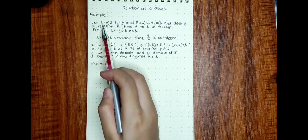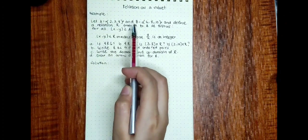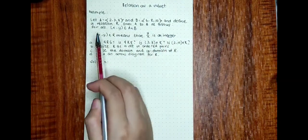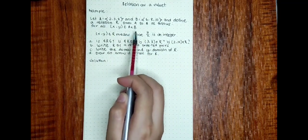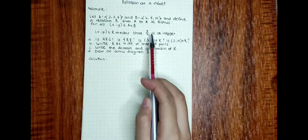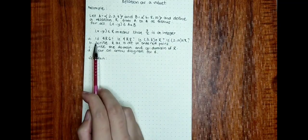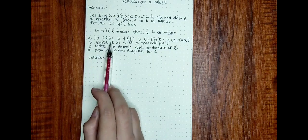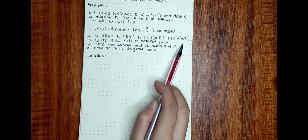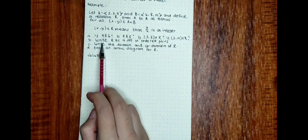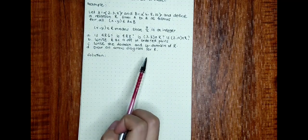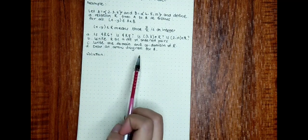For example, let set A equal {2, 3, 4} and set B equal {6, 8, 10}, and define a relation R from A to B as follows: for all x and y elements of A and B, (x, y) is an element of R means that y over x is an integer. The questions are: Is 4 related to 6? Is 4 related to 8? Is (3, 8) an element of R? Is (2, 10) an element of R? Letter B: write R as a set of ordered pairs. Letter C: write the domain and codomain of R. Letter D: draw an arrow diagram for R.